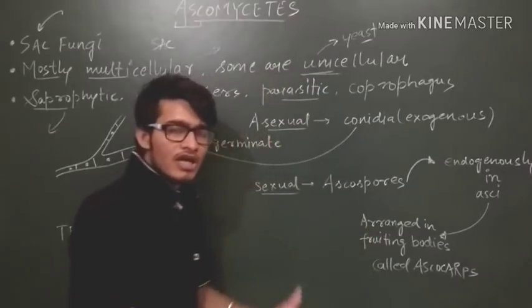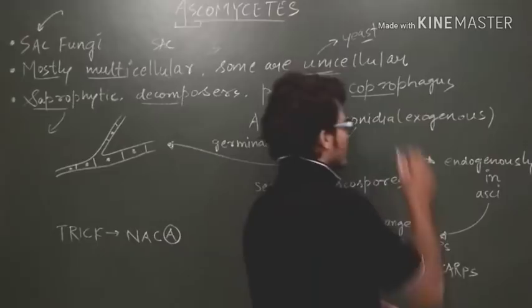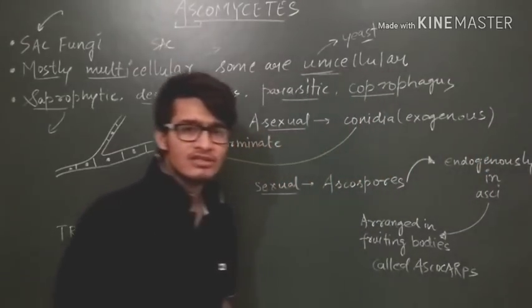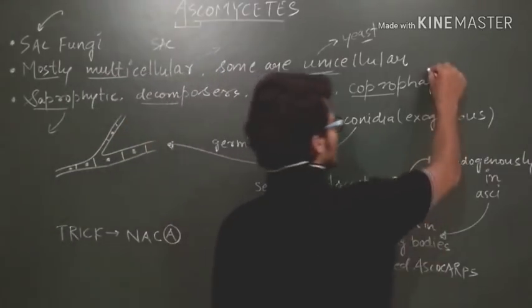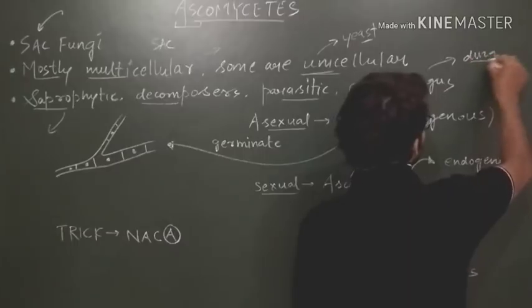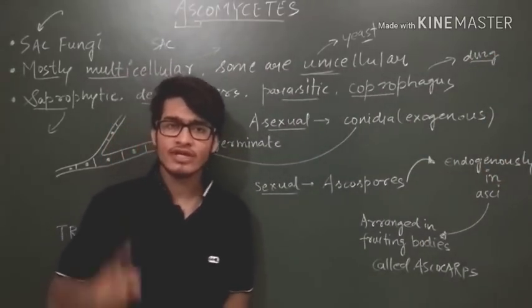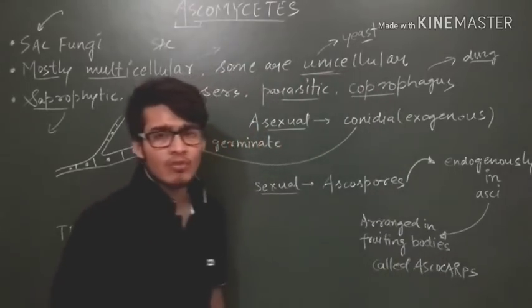They can grow on other plants for nutrition. And they can be coprophagus. This term is very important. Coprophagus simply means growing on dung. So they can be saprophytic, they can be parasitic, they can be decomposers, and they can be coprophagus.